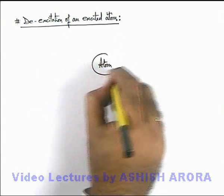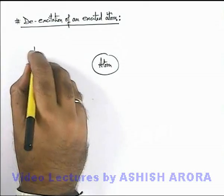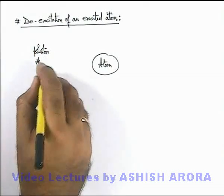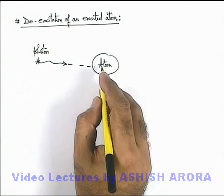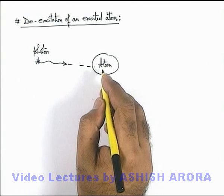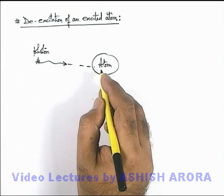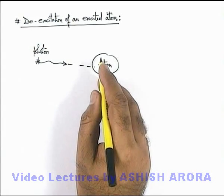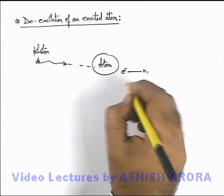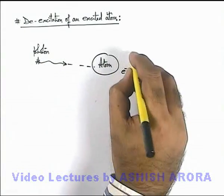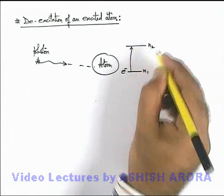when electromagnetic radiation photon is supplied to an atom, if the photon energy is equal to the difference in two energy levels of the atom, the electron in lower energy state will excite to the higher energy state. Say initially the electron was in n1 state and after supply of this photon it will excite to n2 state.